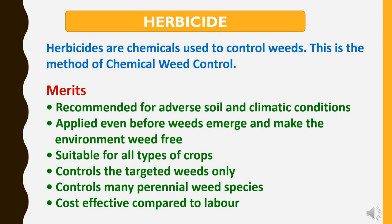What is a herbicide? Herbicides are chemicals used to control weeds. This is the method of chemical weed control. What are the merits of herbicide use? They are recommended for adverse soil and climatic conditions; applied even before weeds emerge to make the environment weed-free; suitable for all types of crops; controls targeted weeds only; controls many perennial weed species; and is cost effective compared to labor expenses.